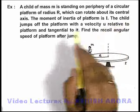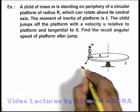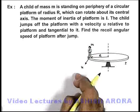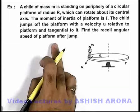The child jumps off the platform with a velocity u relative to the platform and tangential to it. We are required to find the recoil angular speed of the platform after the jump.